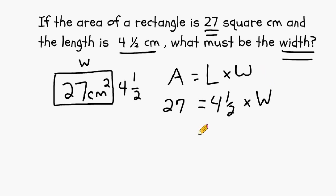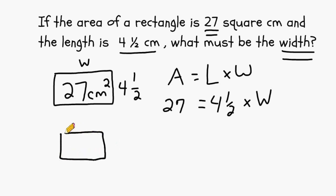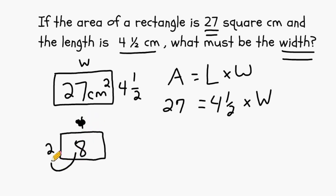To figure out the width of this rectangle, we are going to have to take its area and divide it by its length. A quick way to demonstrate this concept is by taking an easy example, such as a rectangle that has the dimensions 2 by 4, writing the area of that rectangle which would be 8 in the middle, and pretending we did not know the width. If you are ever given the area, you can just divide it by the one given dimension to figure out what the unknown dimension is. So in this case, 8 divided by 2 would give us 4.